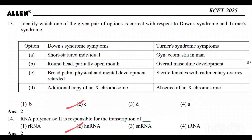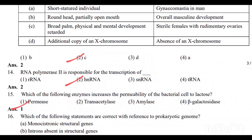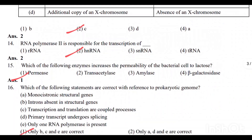Question number 13: Identify the correct pair with respect to Down syndrome and Turner syndrome. Option 2, C, is the correct answer. Question number 14: RNA polymerase 2 is responsible for the transcription of Option 2, hnRNA.